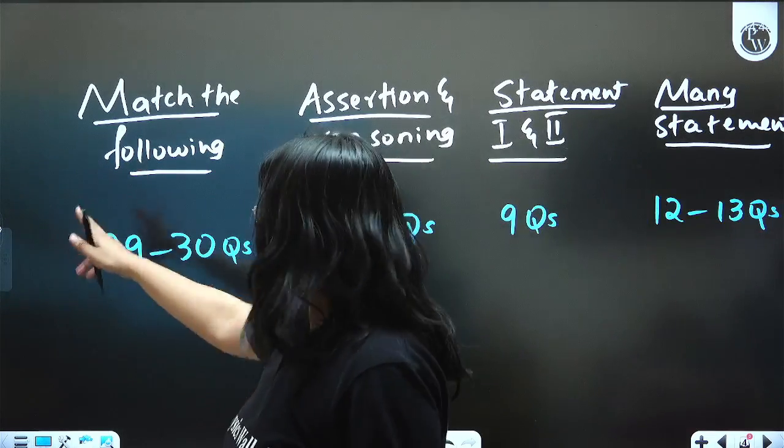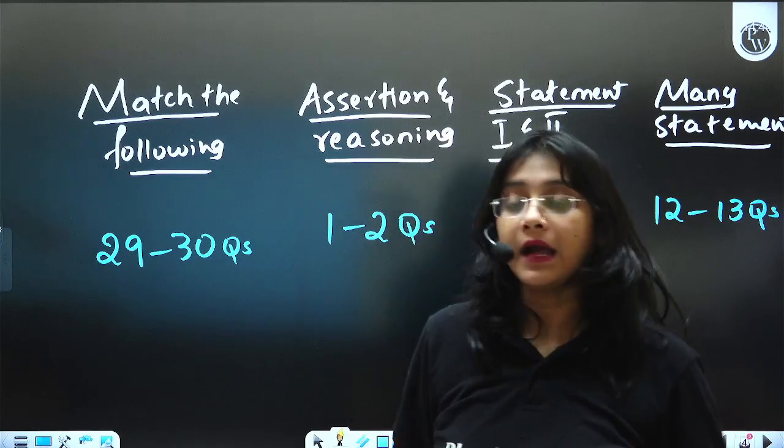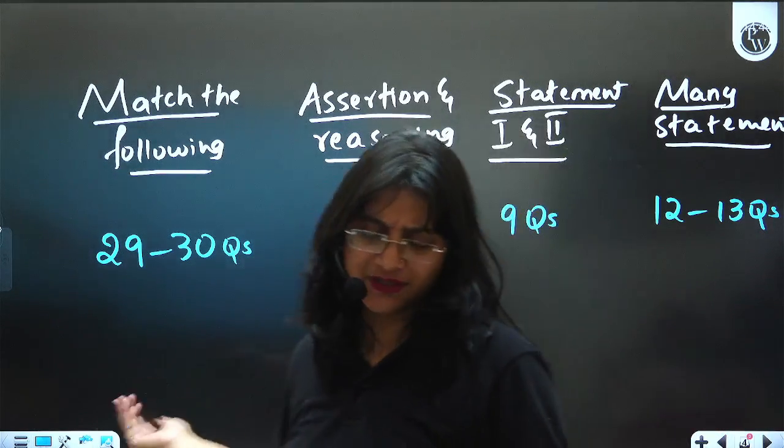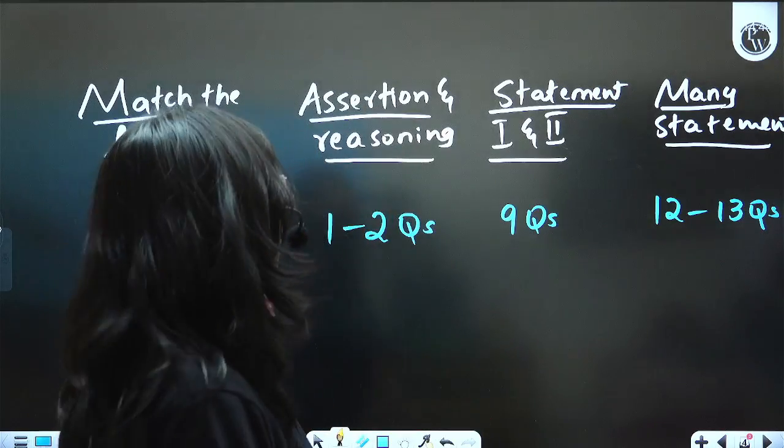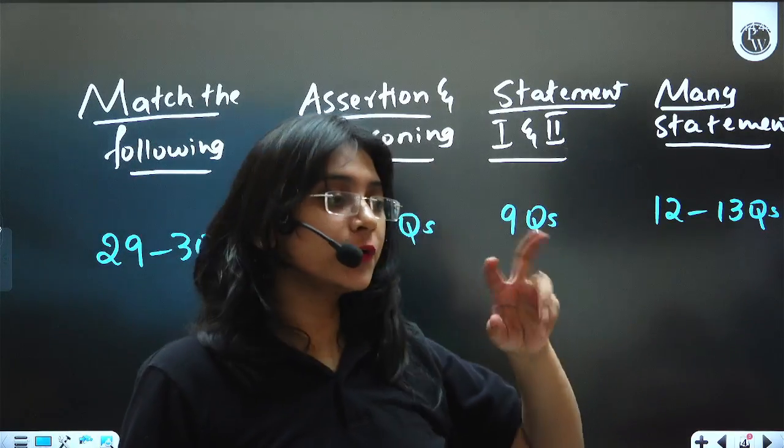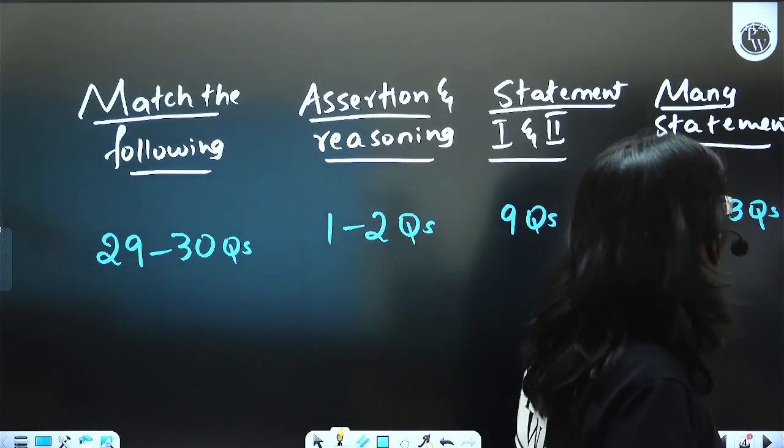In match the following, around 29 to 30 questions will be asked last year. Assertion and reasoning questions, it was maximum two, that's it. And in statement-based questions, there are two types. One is they would be just giving two statements, you have to choose which is right, which is wrong. Another is multiple statement-based questions.